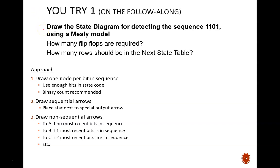The first problem asks for detecting the sequence 1101 using a Mealy model. There are also two follow-up questions. The approach for drawing the state diagram is, first, draw one node per bit in the desired sequence. In this problem, four bits means there should be four nodes. On each node, include a state code with enough bits. Two bits will be enough to uniquely distinguish four nodes. Second, draw the sequential arrows with the input number next to them.